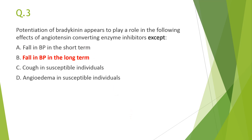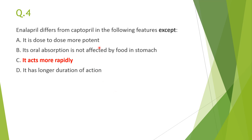Fourth question: enalapril differs from captopril in the following features except — the answer is C, 'it acts more rapidly.' Enalapril actually acts more slowly than captopril. Enalapril is dose-for-dose more potent, so it is required in lower doses. Its absorption is not affected by food, and it has a longer duration of action.